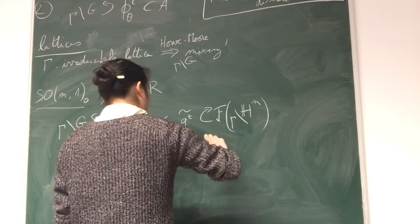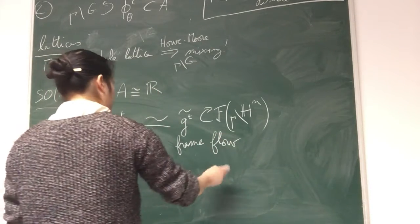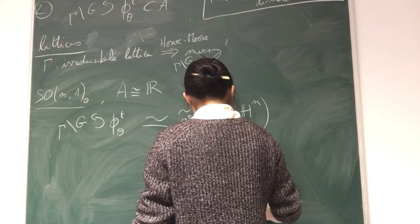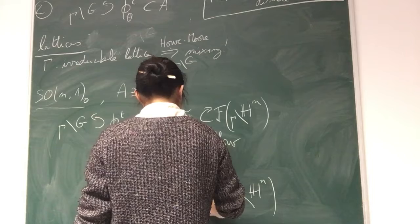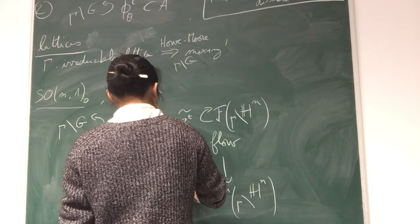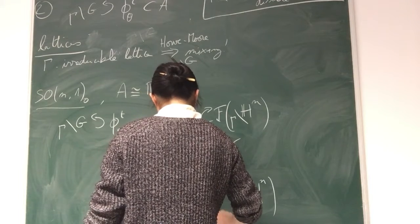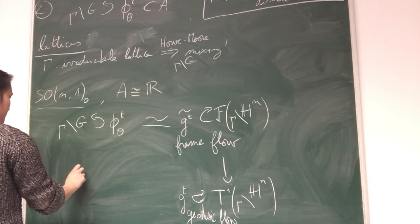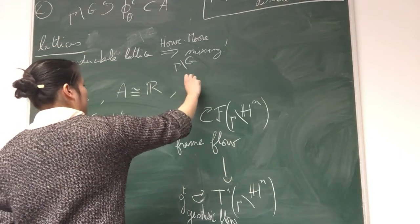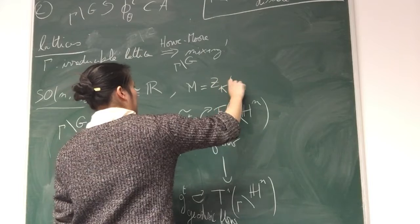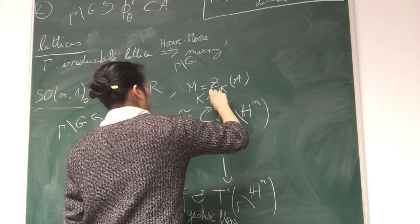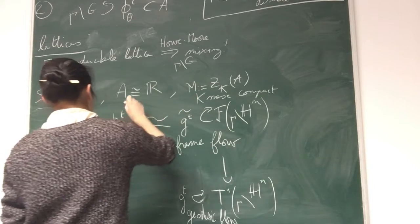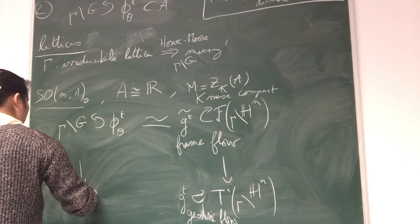The frame flow acting on the frame bundle of my hyperbolic n-space. So this is the frame flow which of course projects into the geodesic flow and factors through it. And here, say M is the centralizer of A in K, where K is the maximal compact. So M here is SO(n-1).